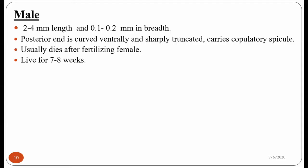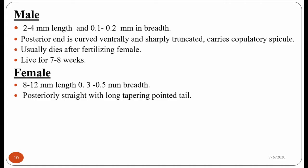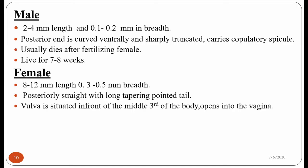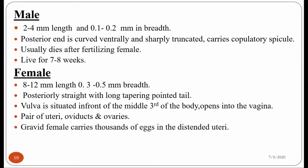The adult female worm is larger than the male, approximately twice larger in size, measuring 8 to 12 millimeters in length and 0.3 to 0.5 millimeters in breadth. The posterior end of the adult female worm is pointed. The vulva is present in the female worm and opens into the vagina at the middle body. There is a pair of uterus, oviducts, and ovaries, and the uterus is distended — completely filled with numerous eggs, approximately 5,000 to 17,000 eggs.